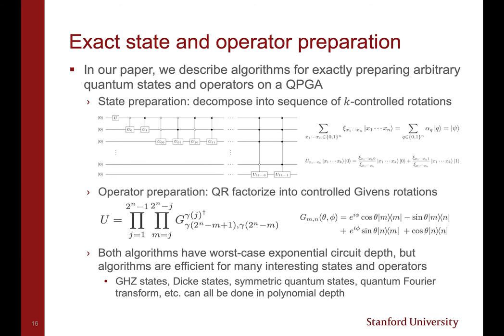For operator preparation, one can use QR factorization to decompose the target unitary operator into a sequence of controlled Givens rotations. These rotations do not have any physical quantum gate analog, but if the basis states are permuted using the Gray code ordering, denoted by γ, then they correspond to the Givens rotations applied to a single photon controlled by all other photons.